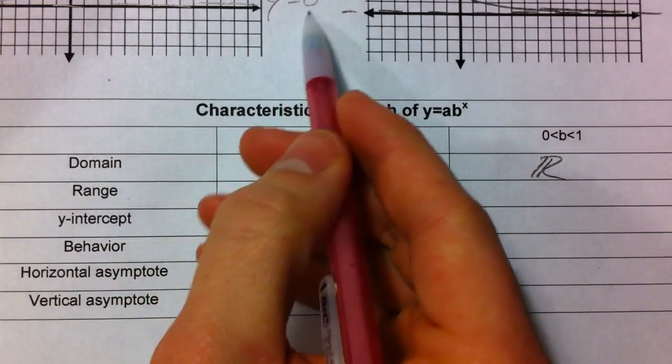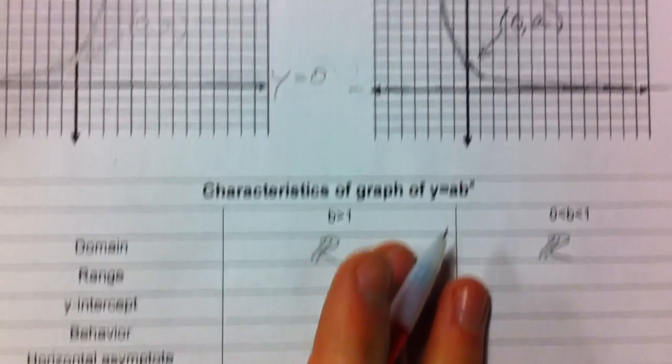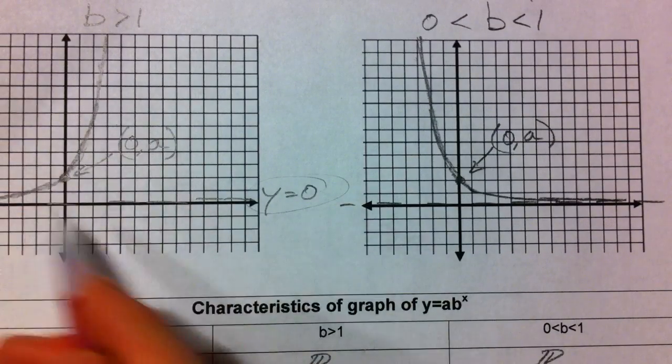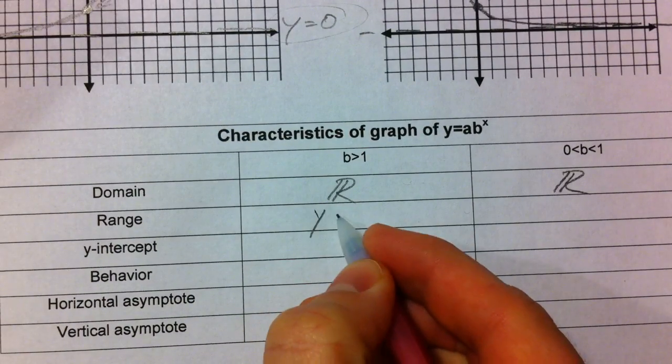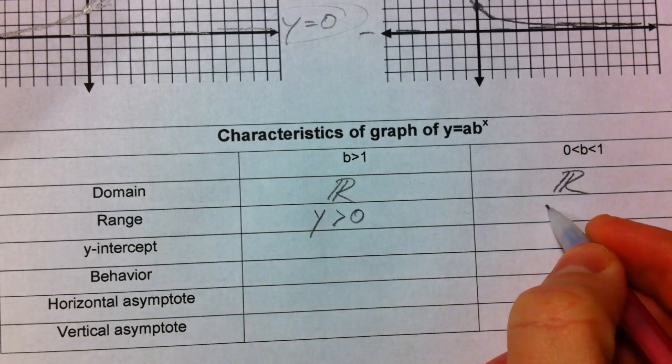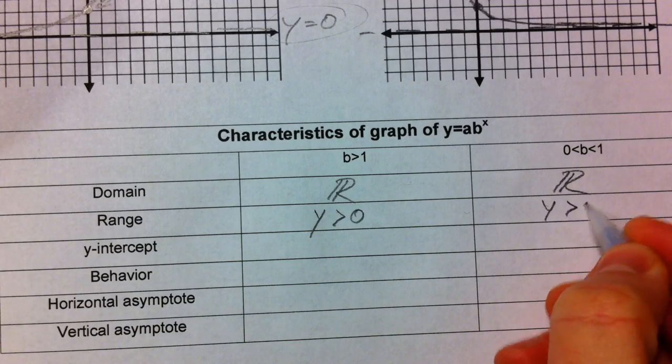Our range is all based on this y equals 0 line. All our y values are always positive. That's going to change slightly when we start shifting it. But for right now, the basic graph, the range is always going to be greater than 0.